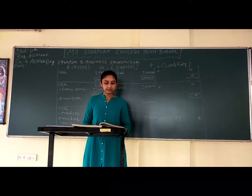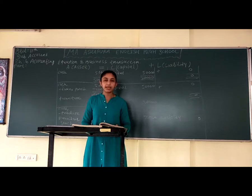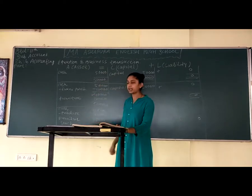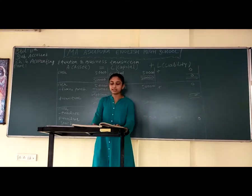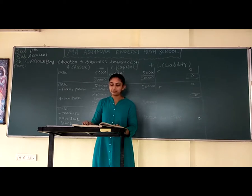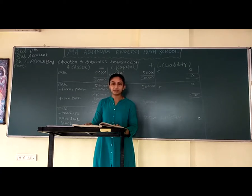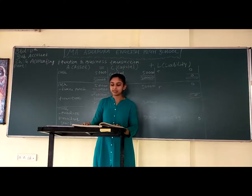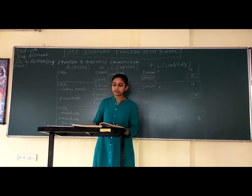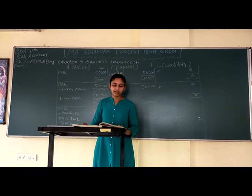Next: Rs. 6,000 paid for wages. Journal entry: wages account debit to cash. Wages is an expense, deducted from cash. Cash was 38,000, minus 6,000 = 32,000. Stock remains 13,000, furniture 10,000 as it is. Capital was 53,000, minus 6,000 wages = 47,000. Liability stays at 8,000. Total: 55,000 = 47,000 + 8,000.